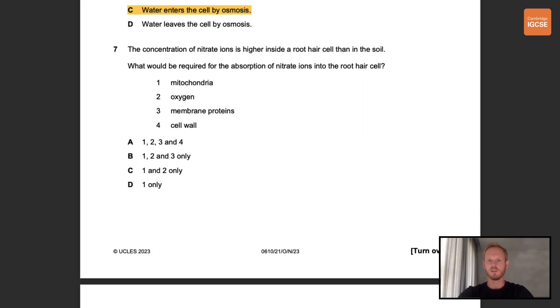Number seven. The concentration of nitrate ions is higher inside a root hair cell than in the soil. What would be required for the absorption of nitrate ions into the root hair cell? So the process by which molecules or ions are moved through a cell membrane against a concentration gradient is referred to as active transport. Active transport uses energy from respiration, so mitochondria and oxygen are both required, and the ions are transported by carrier proteins in the membrane. So membrane proteins are also required. The correct answer is therefore B.